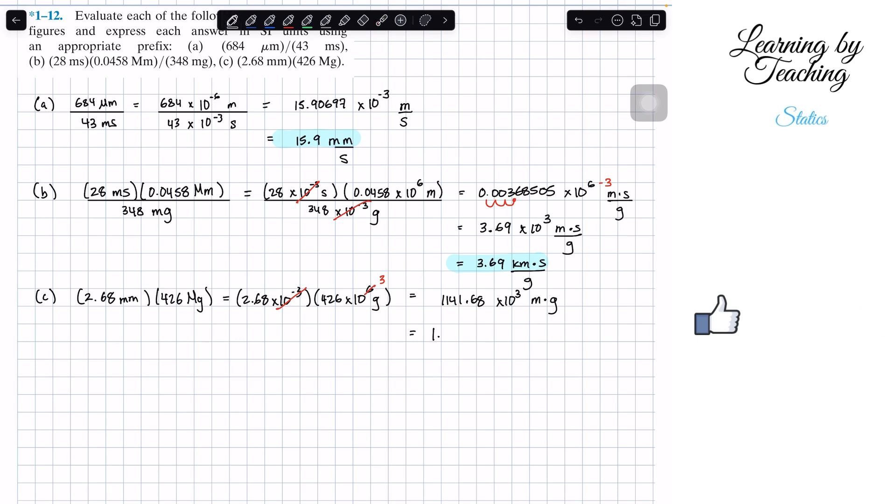So it ends up with 1.14 because of the 3 significant figures, times 10 to the positive 6 meters times grams. And then that can be converted into 1.14 megameters times grams. So I will call that a solution. However, it's very weird to find megameters. So the other thing we can do is call it 1.14 kilometers times kilograms. We split this times 10 to the 6 twice, so we got times 10 to the 3 times 10 to the 3. And that will make us into a kilometer and also a kilogram. Either of these two answers is correct.